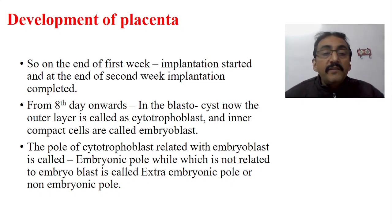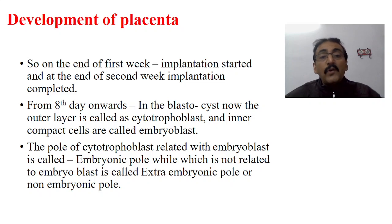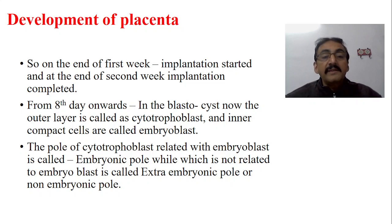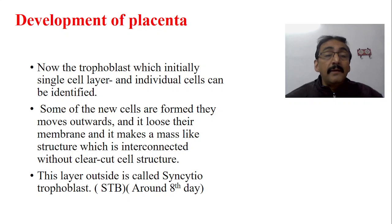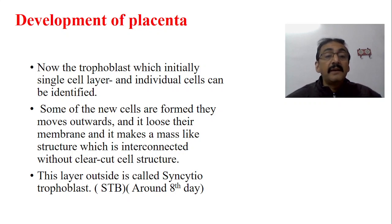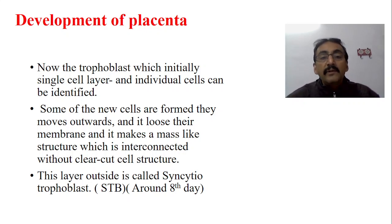From the eighth day onwards, the outer layer of the blastocyst is called the cytotrophoblast and the inner compact cells are called the embryoblast. The pole of the cytotrophoblast related to the embryoblast is called the embryonic pole, while the opposite is the extra-embryonic or non-embryonic pole. Some new cells are formed, move outwards, lose their membranes, and form a mass-like interconnected structure without clear-cut differentiation. This outer layer is called the syncytiotrophoblast, or STB, forming around the eighth day.